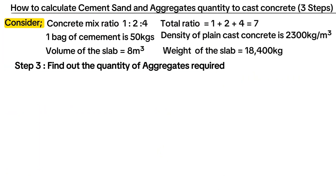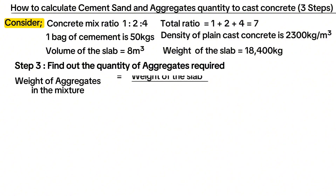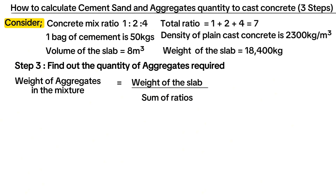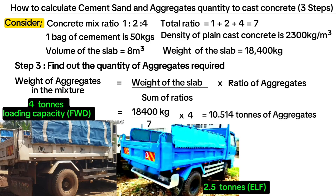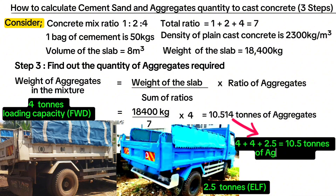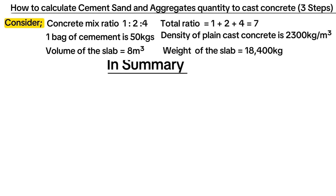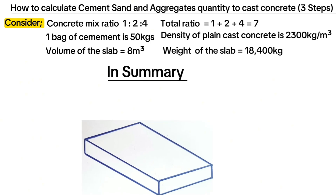The third step is to find out the quantity of aggregates required. The weight of aggregates in the mixture is equal to the weight of the whole slab divided by the sum of ratios, multiplied by the ratio of aggregates. Feeding in the figures, we get the weight of aggregates required as 10.514 tons. One Ford truck has a loading capacity of 4 tons, meaning you buy two Ford trucks and one half truck to get the approximate value of 10.514 tons.